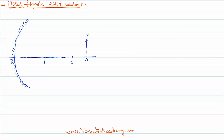Now let us first identify what is given in the data. The distance between P and F — the distance between the pole and the principal focus — is the focal length. The distance between P and C is called the radius of curvature, which is equal to double the focal length. The distance between P and O is the object distance, represented with the letter u. Now we have to draw the image to find the relation between u, v, and f.